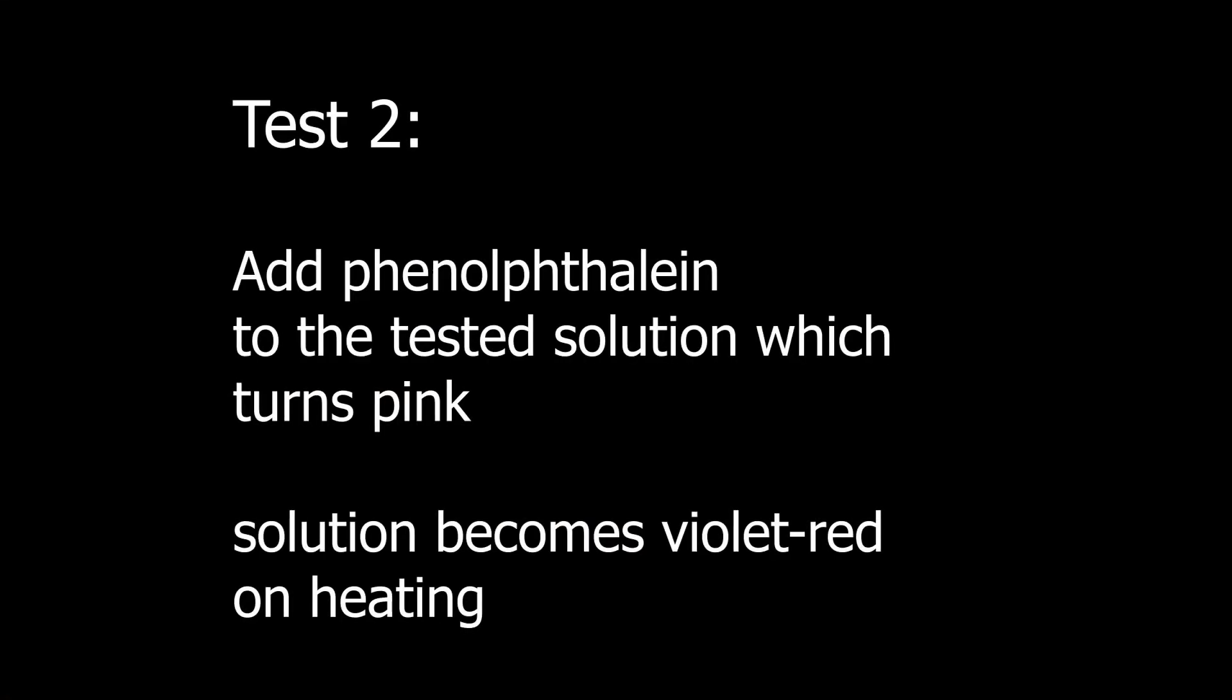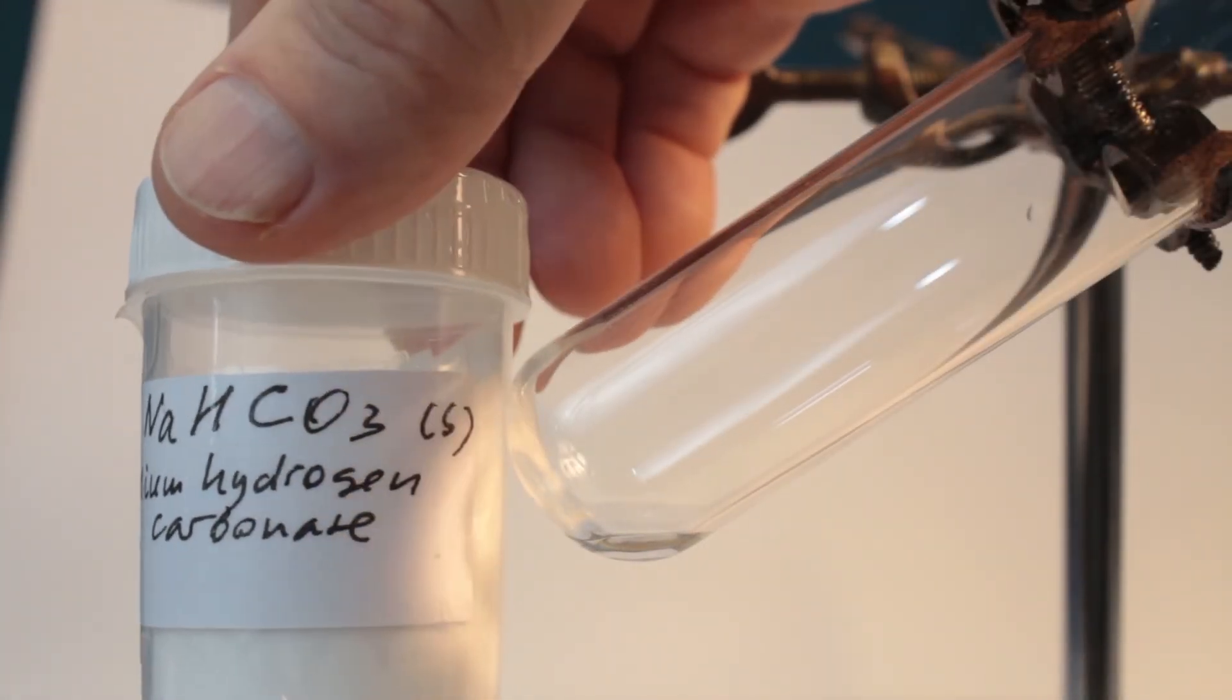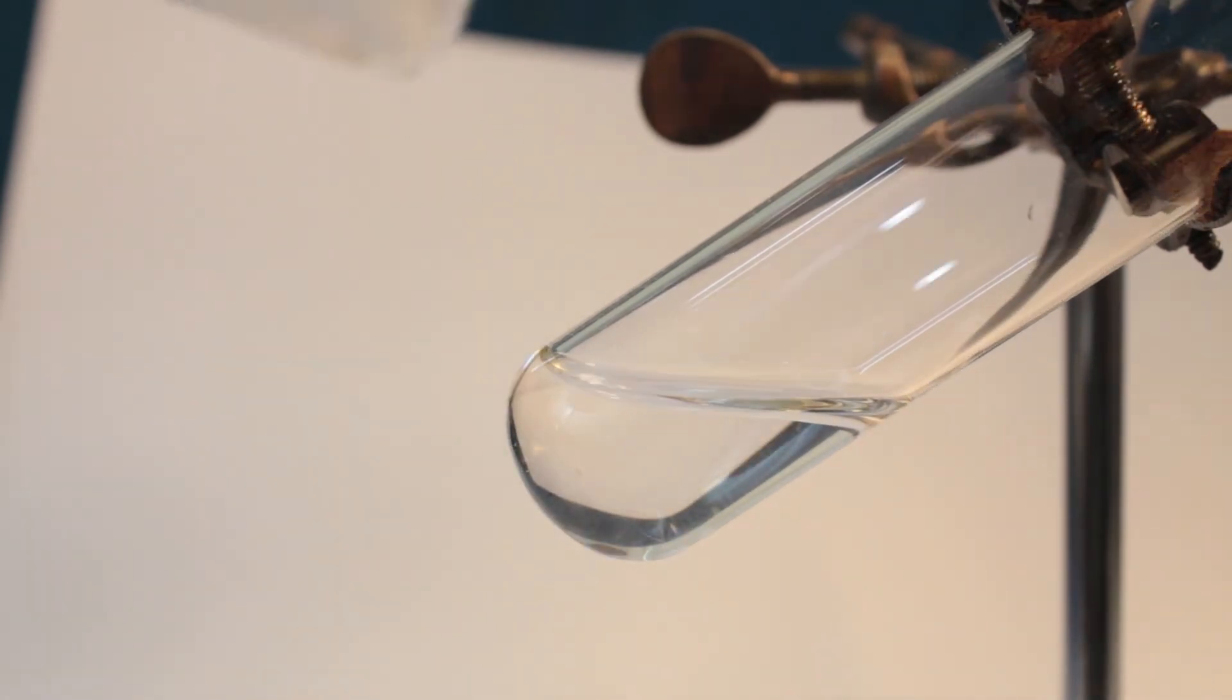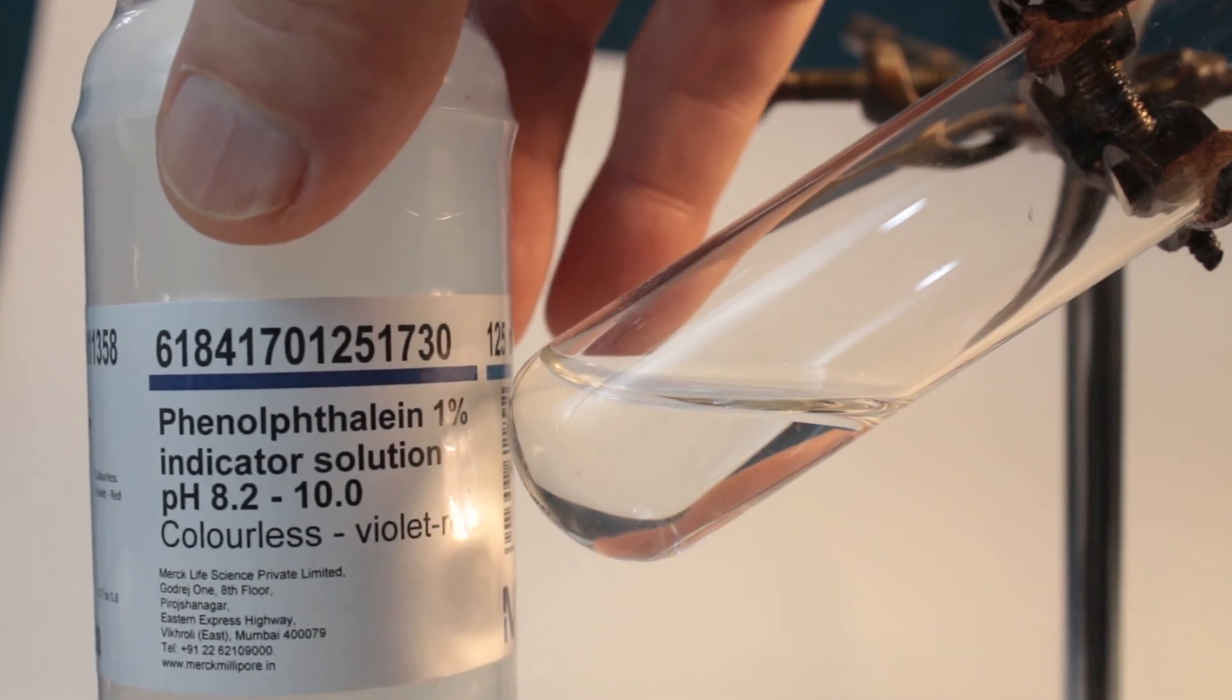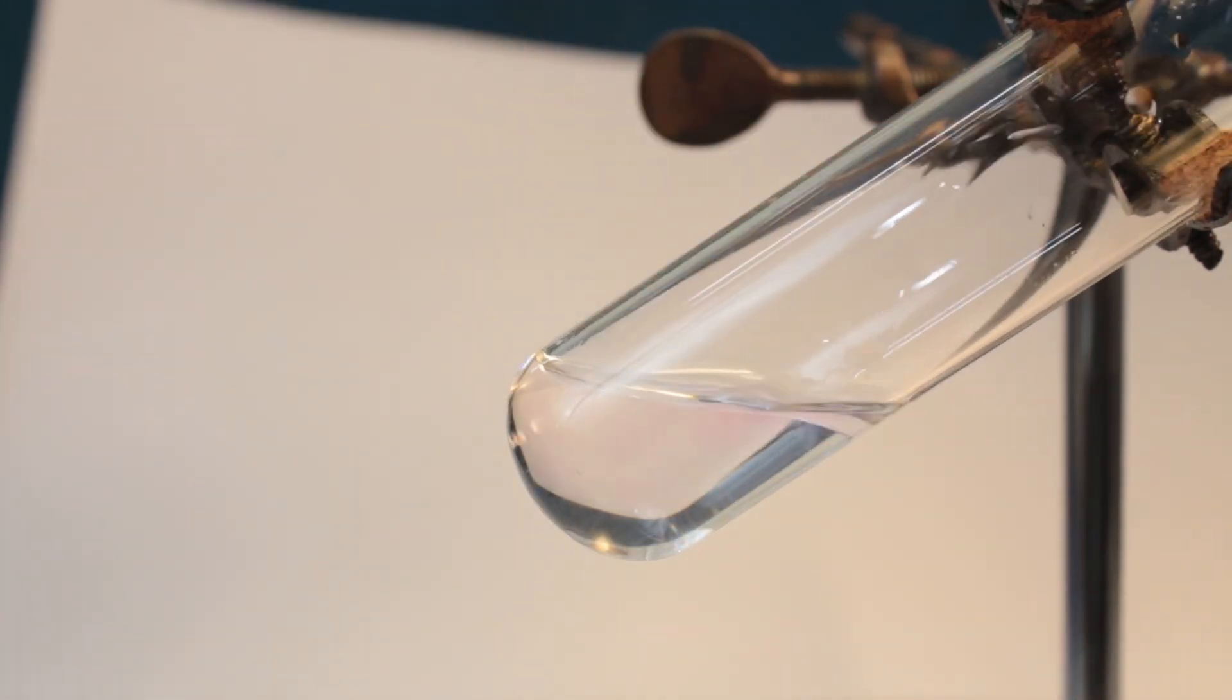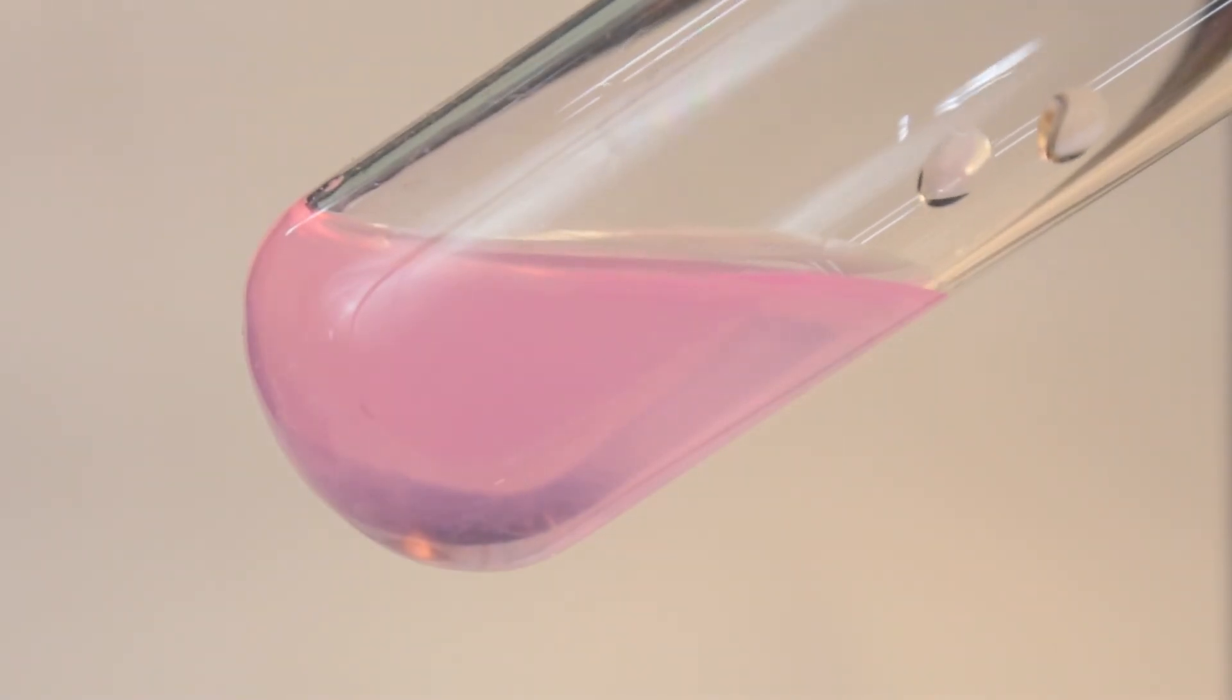Now let's look at second test with phenolphthalein. It's just checking growing pH on heating. For the positive result we use the same sodium hydrogen carbonate. And add phenolphthalein. On addition, solution should be just pale pink. That's part of the test.